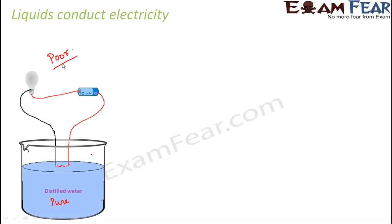Now you might say that sometime back, while talking about good and bad conductors, you said that water is a good conductor, but now you are saying that it is a bad conductor. Well, right now I am talking about distilled water — that is the purest form of water, which does not contain anything in it. So pure water is always a poor conductor of electricity. Now let us see what happens when this water contains a little bit of added impurities or added salts.